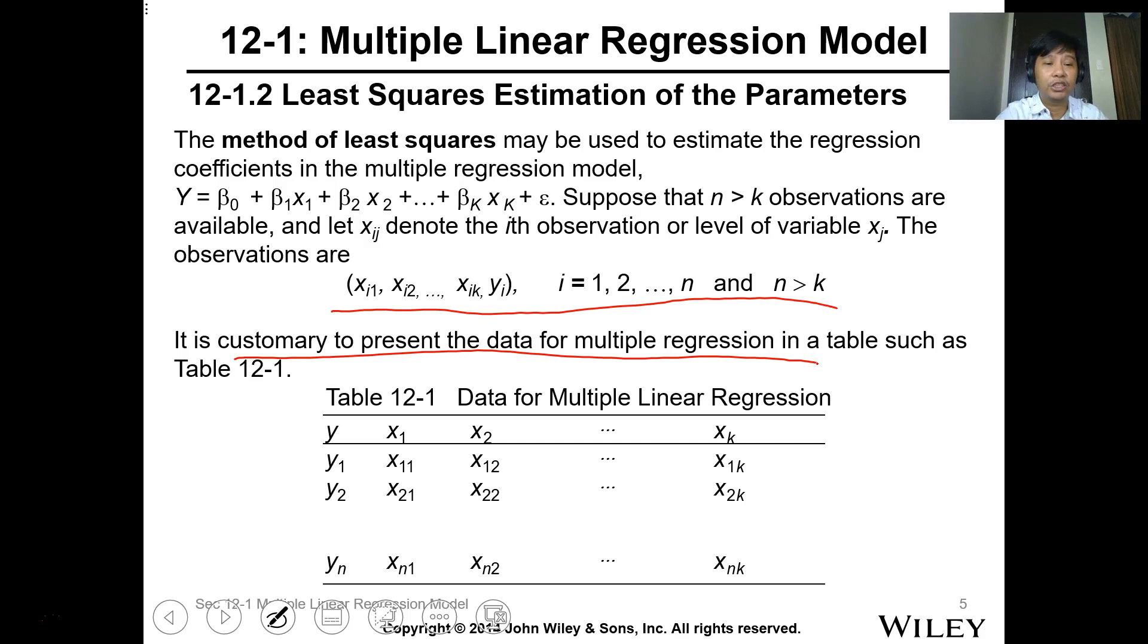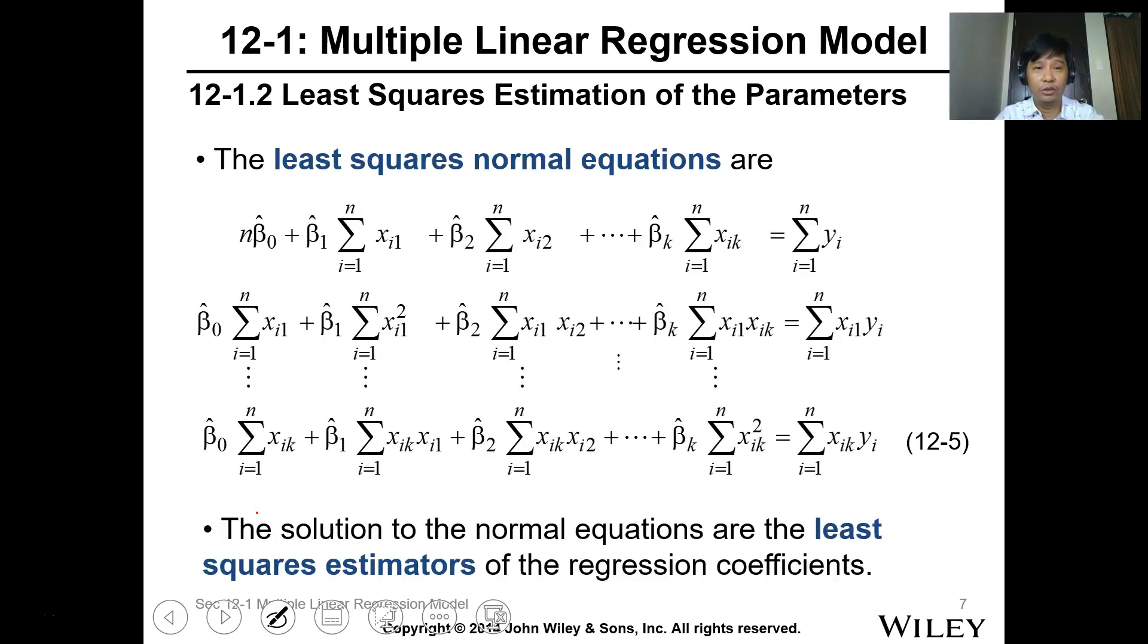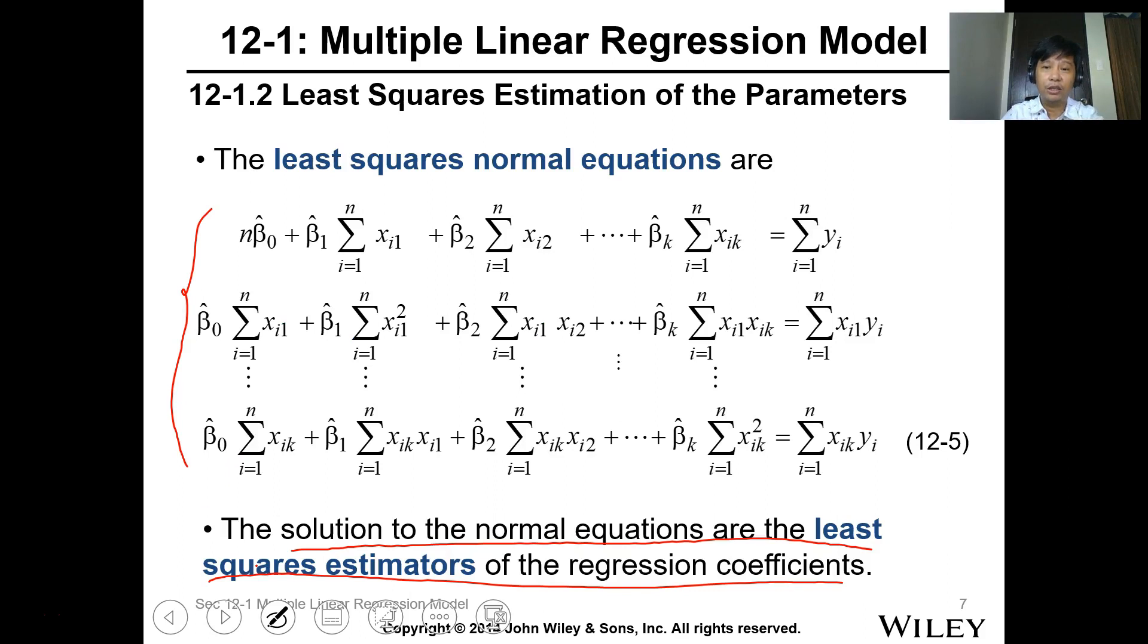Let xij denote the i observation of level of variable xj. It is customary to represent data on multiple regression as tabulation. So as you can see here, you have the response and your independent variables or what we call the regressors. The least square model uses normal equations, and the solution to the normal equation are the least square estimator. For this type of regression, we will use Excel, but I will teach also the matrix procedure or the matrix algebra process.